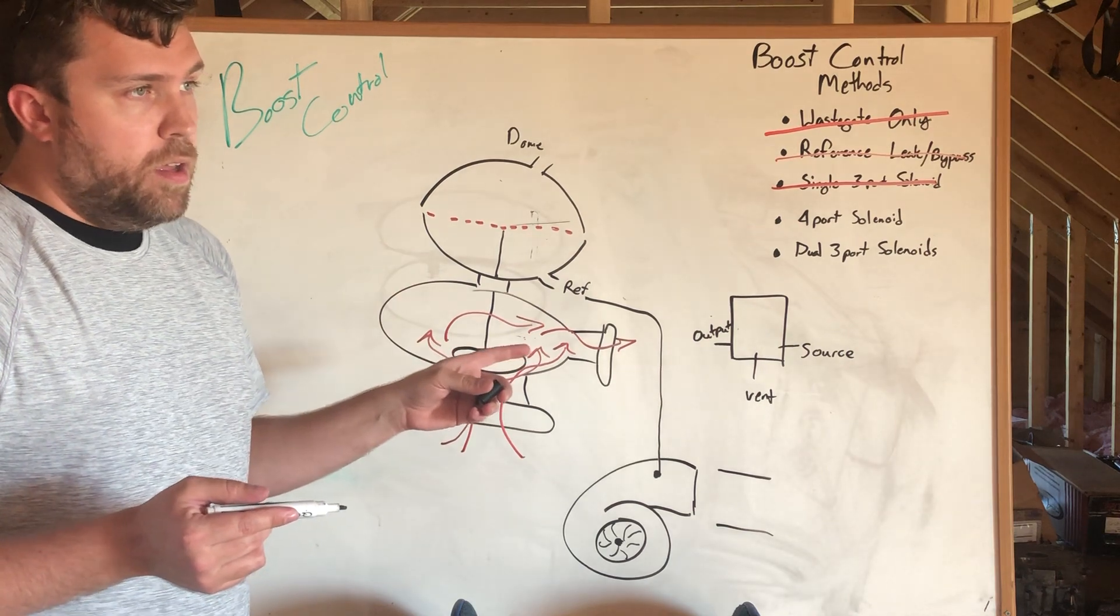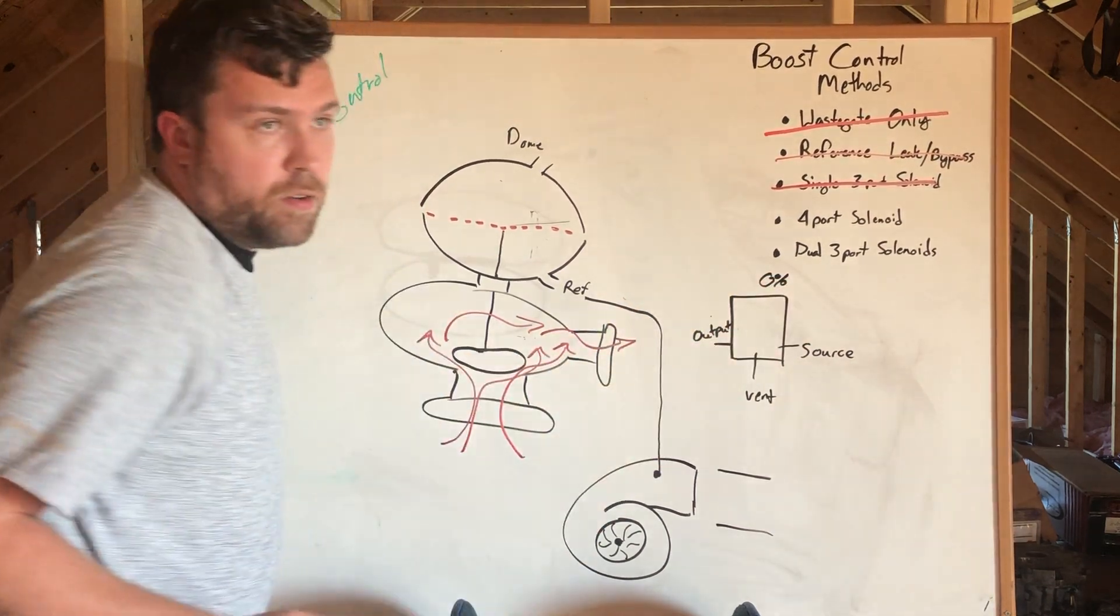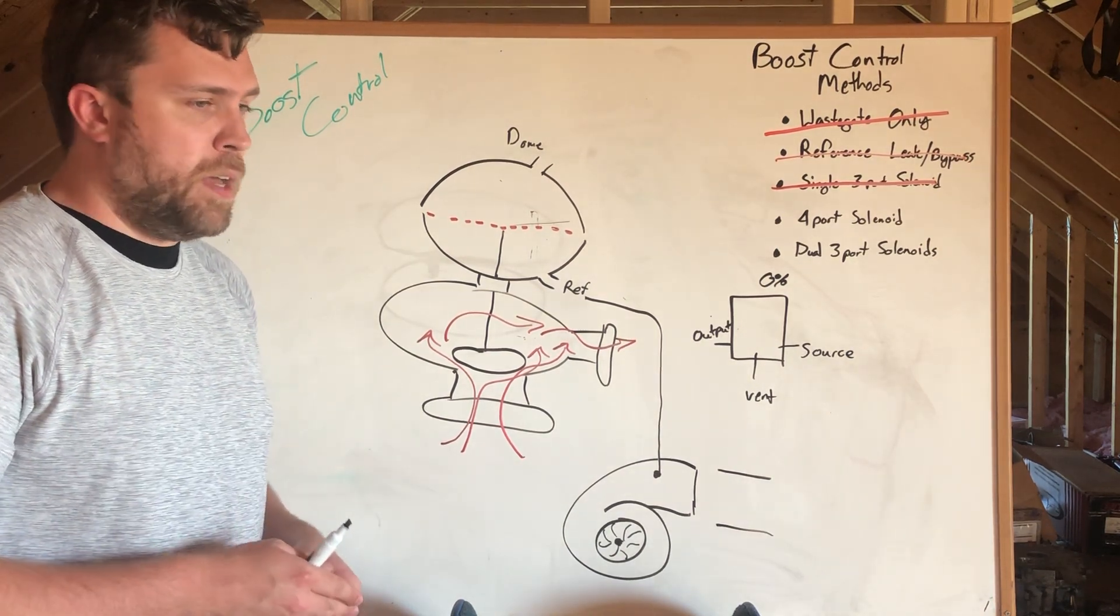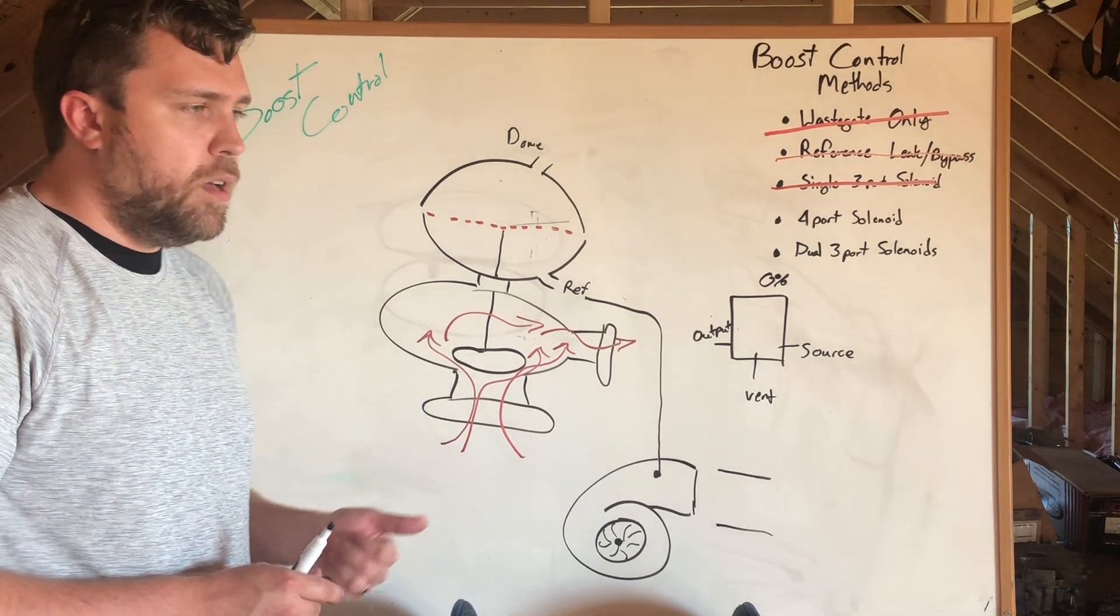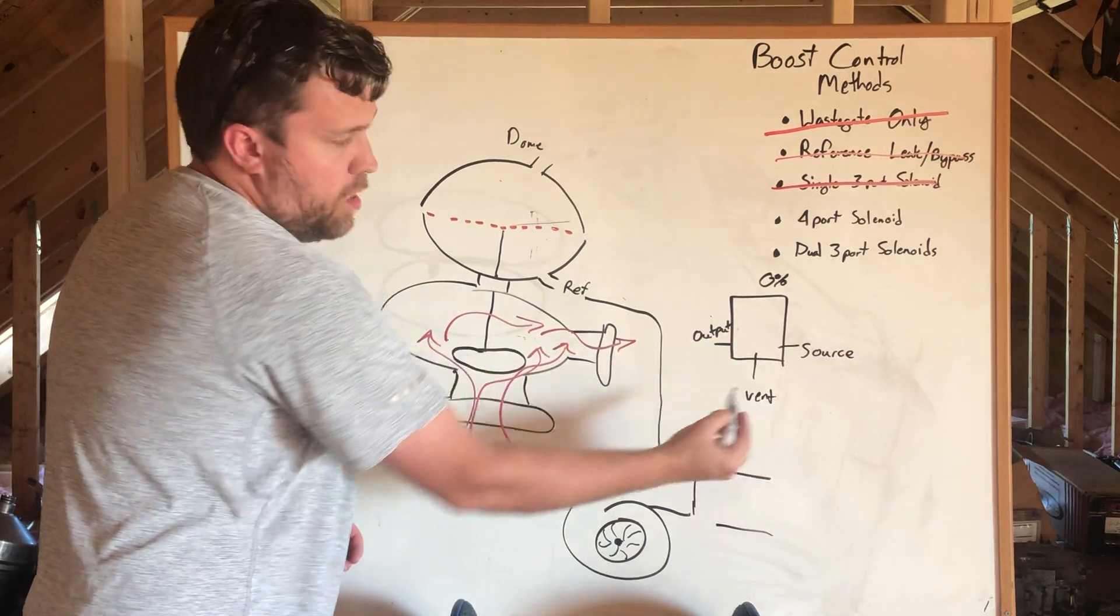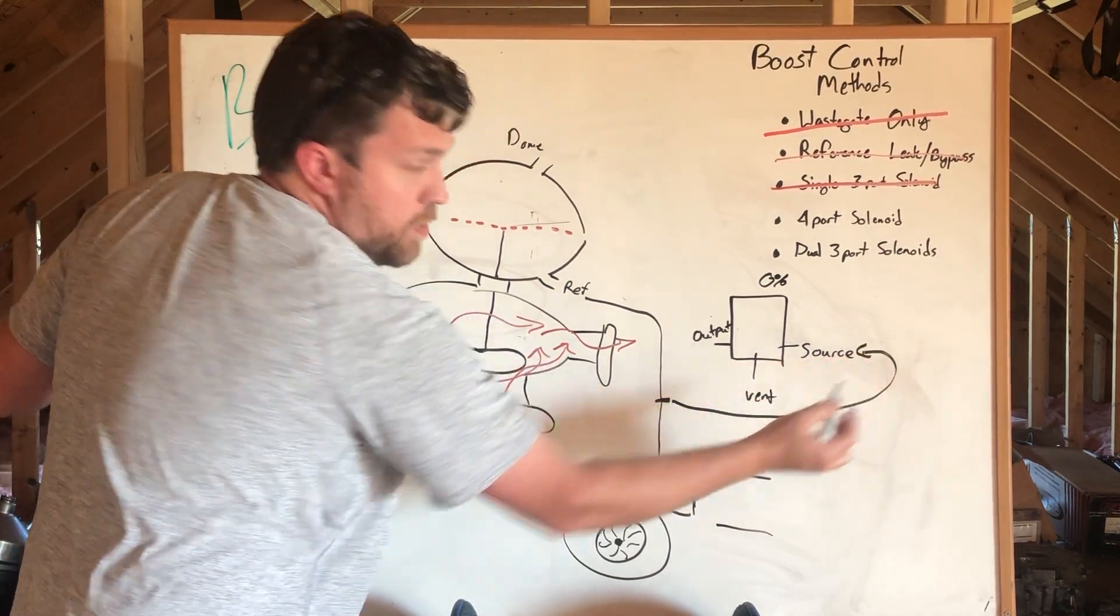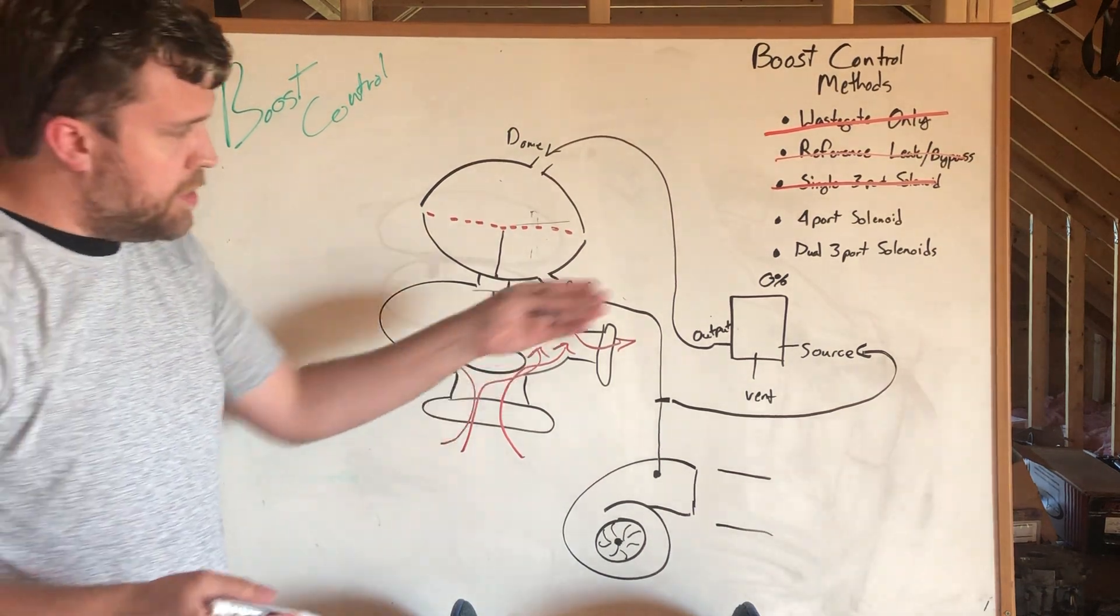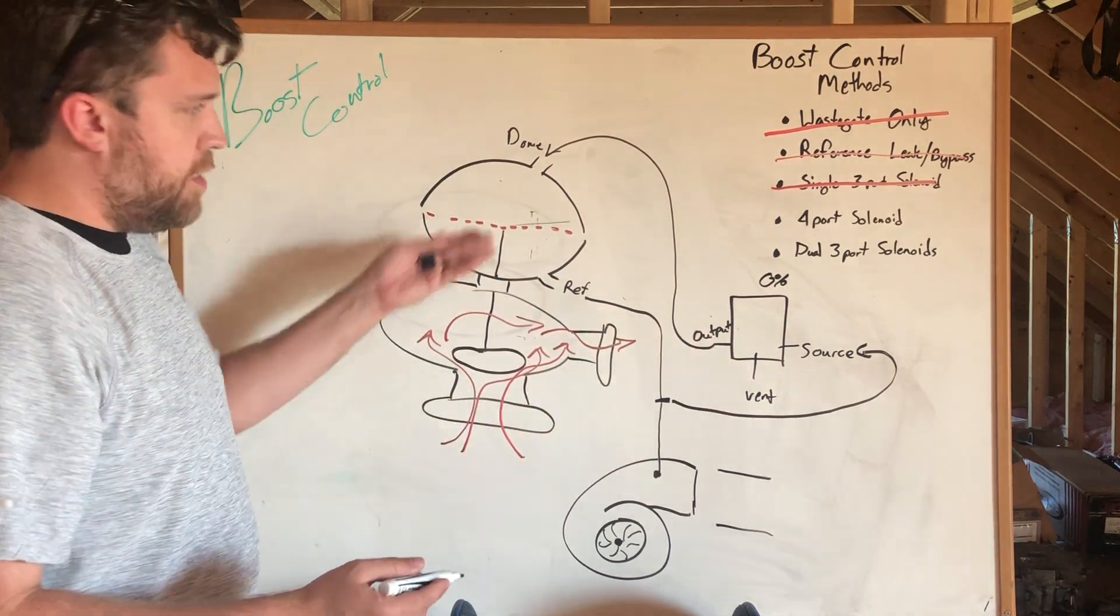The three port very simply is at this time if we're at zero percent duty cycle that means that the Holley has an output that is commanding a set duty cycle based on whatever parameter you want to set up and we can talk about that stuff in probably a later video that's more on the ECU side. At a zero percent duty cycle the source is blocked and the output can vent. The way that this gets plumbed is you T into the reference line to feed the source and then you come from the output to the dome. Now what this does is at zero percent that means that the dome is effectively vented to atmosphere and you're effectively making wastegate pressure at zero percent duty cycle.